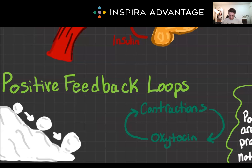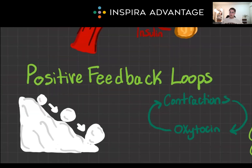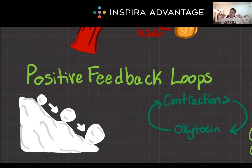Now for positive feedback loops. This is sort of like a snowball rolling down a hill — it gets bigger and bigger as it goes. They are crucial in processes that need a rapid, self-limiting end, like childbirth. In labor, the release of oxytocin enhances contractions, which in turn promotes the release of more oxytocin to make contractions even more intense, continuing until eventually a birth occurs.